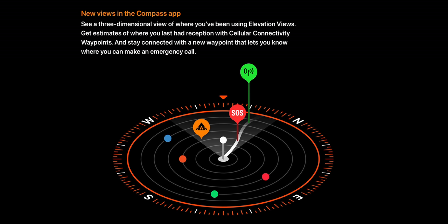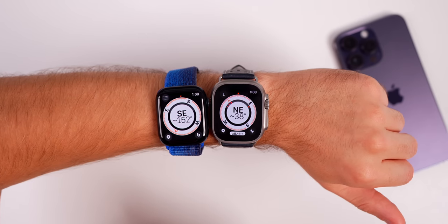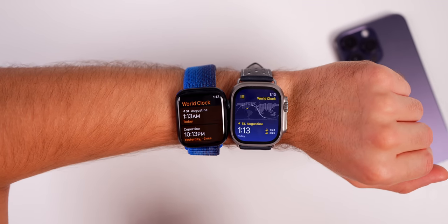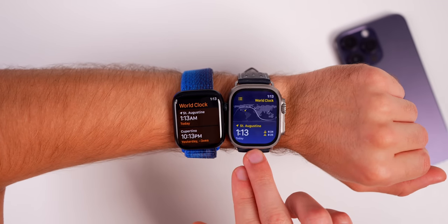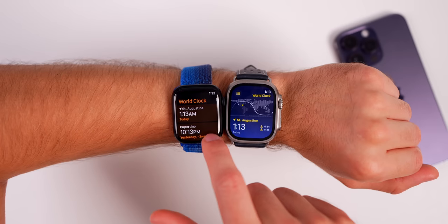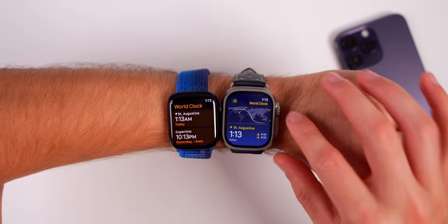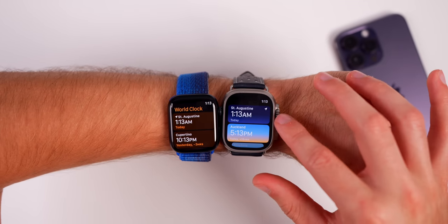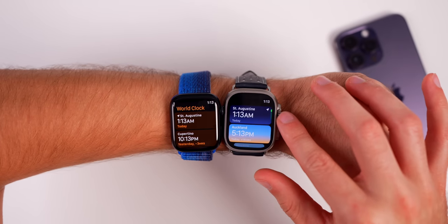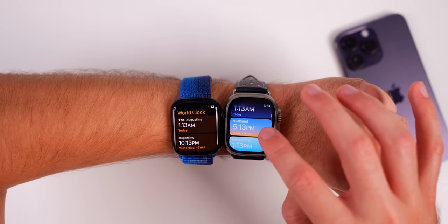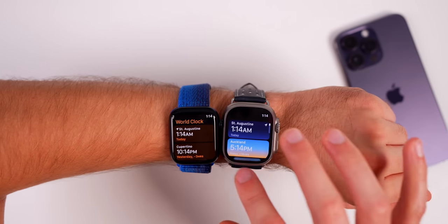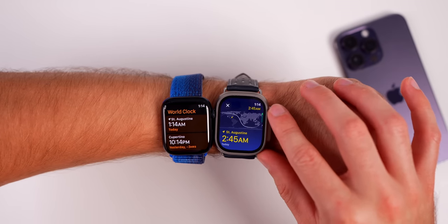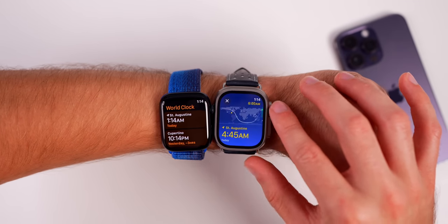The Compass app now has a 3D view with some UI changes — the elevation in feet is shown at the bottom middle and there's an eye icon in the top left. The Clock app has a big update too: instead of just a list of times you now have a visual for each city including sunrise and sunset times. Cities are color coordinated and you can use the crown to see what it'll look like at a specific time of day in your selected location.